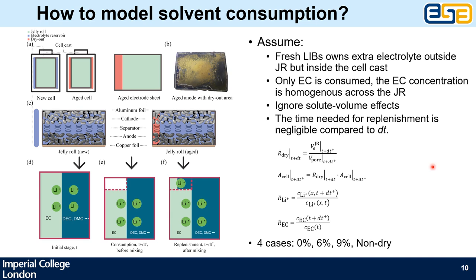What is worth noting is that we ignore the hydraulic process, because this hydraulic process should be much quicker compared to the SEI growth. We define a dry-out ratio here, which is the electrolyte volume over pore volume inside the electrode. Apart from that, we also define two ratios to capture the concentration change due to consumption and replenishment processes. We compare our work in four cases depending on the size of the reservoir: zero means there is no extra electrolyte at all; 60% means the volume of the electrolyte reservoir is 60% of the electrolyte volume in the electrode at fresh cells. Similarly for the 90% case. In the non-dry case, we disable our solvent consumption model.